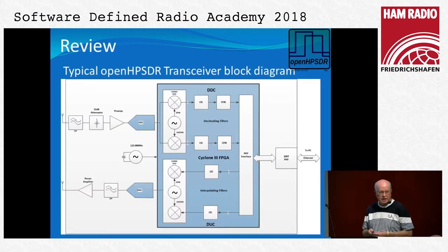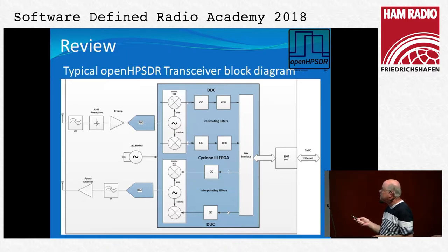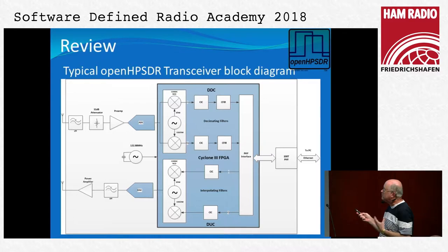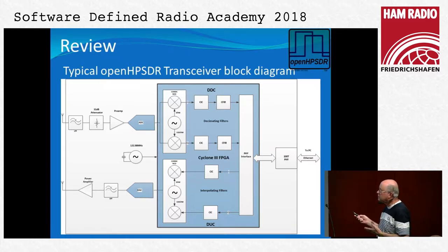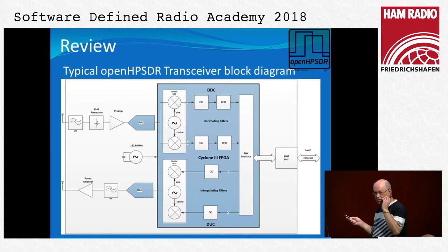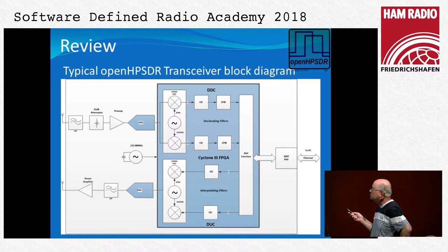Most of today's SDRs that use direct down conversion use this type of architecture. You have your antenna connected to some form of filtering, an attenuator which may be necessary if you've got strong local signals, preamplification and then directly connected to the analog to digital converter. Once you're in the digital mode you then move into doing all the rest of your processing in the digital domain, and typically it's done in either an FPGA, which is typical for the open HPSDR projects, or it could be in an ASIC. So the first thing you do is create your in-phase and quadrature signals with a complex mixer.